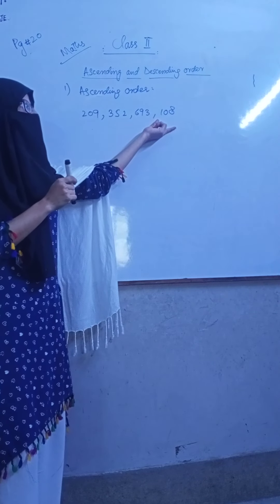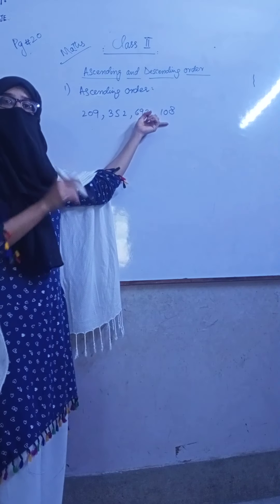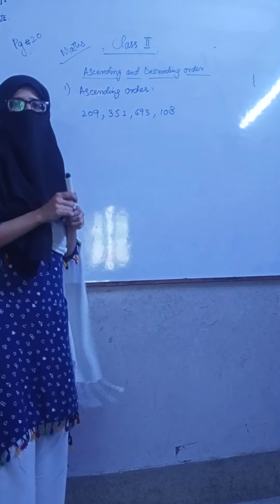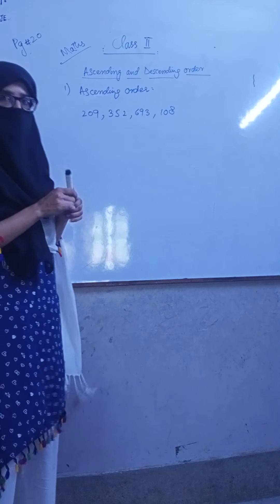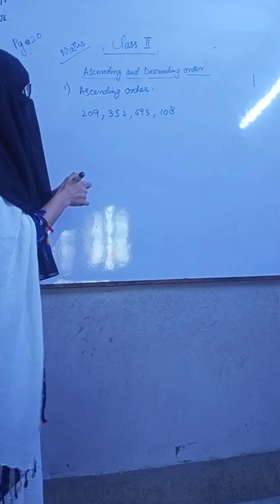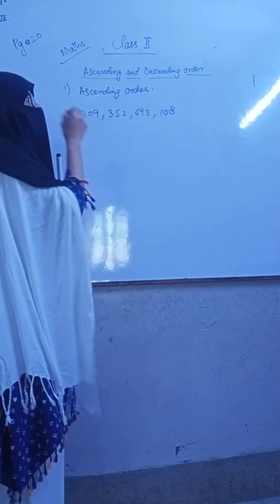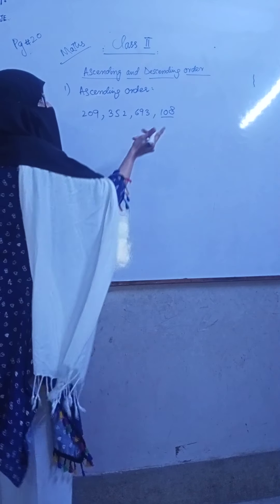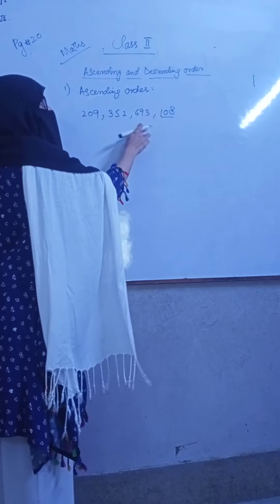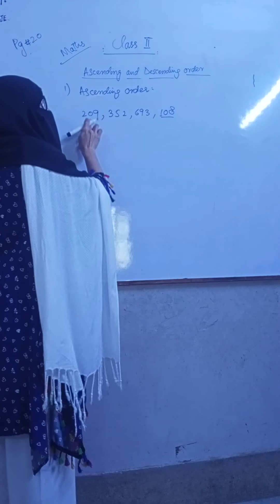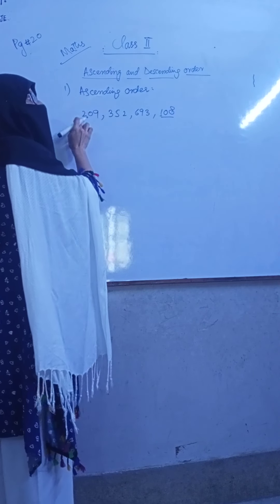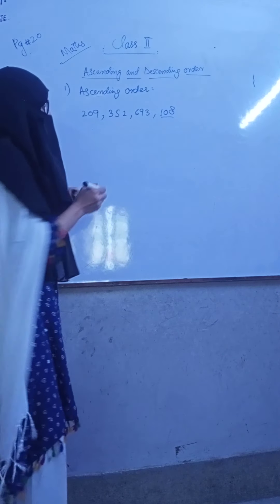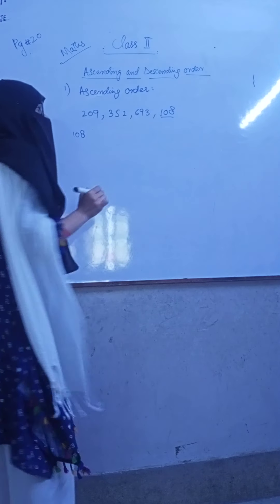First, we take the number with the smallest value. Now we will increase to the highest value, the greatest value. First of all, here is the smallest number. What is it? It is 108. Because 1 is less than 6, 3, 5, 3, and 4. 108 is less than these three numbers. So first of all, here is the smallest number, 108.